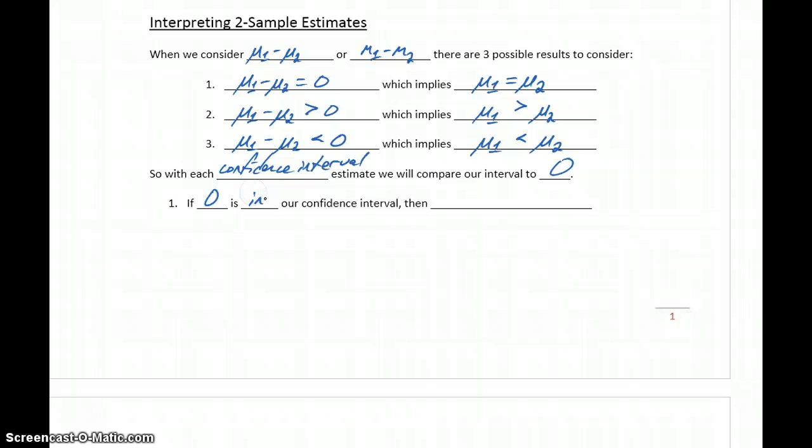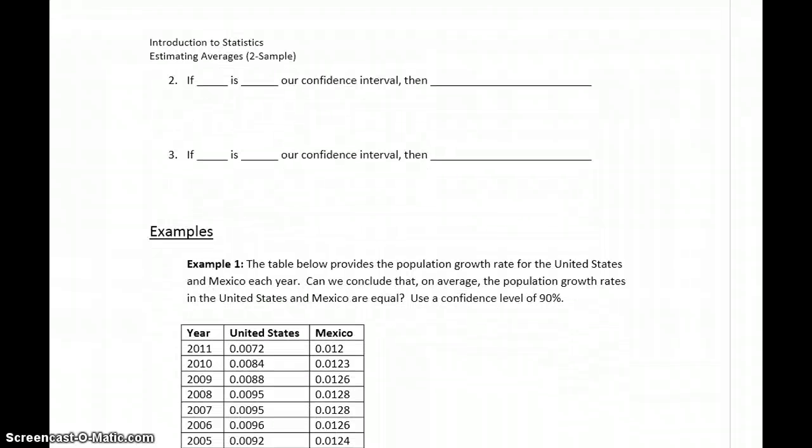If zero is in our interval, that implies that μ₁ equals μ₂, or that M₁ equals M₂, so our two parameters are the same. If we're looking at a confidence interval, that would be the same thing as our confidence interval having both positive and negative values. So if our confidence interval has positive and negative values, it means that zero is contained somewhere in that interval, and so we would conclude that the two parameters are equal.